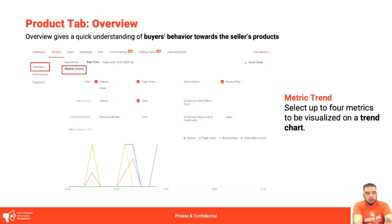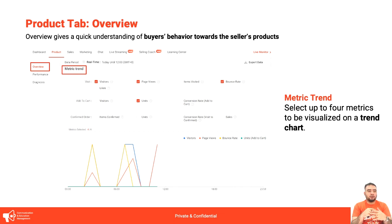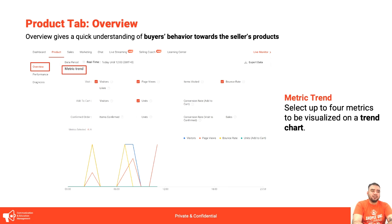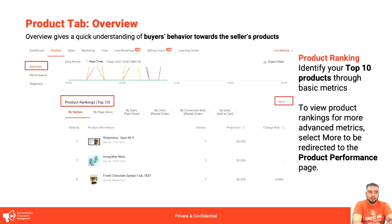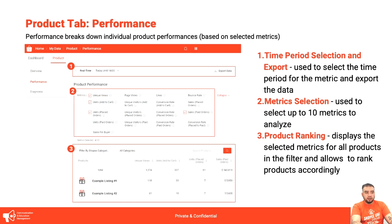With the metric trend, you can select up to four metrics to be visualized on the trend chart — for example, visitor scope, page views, units, or bounce rate. If you feel confused about anything in Business Insights, hover your mouse over the relevant section. You can also view your top 10 product rankings as a shortcut. You can customize the time period — real-time, past day, past week, past month, or any past period — as well as the metric selection and product ranking.